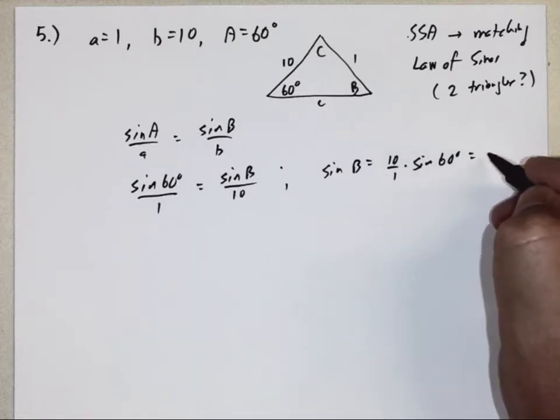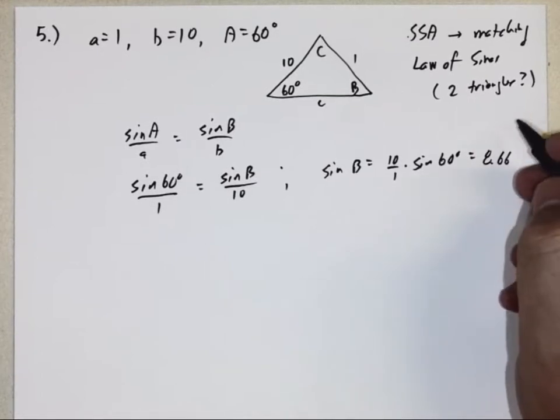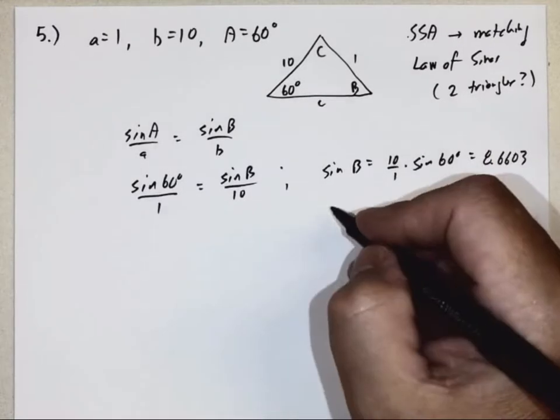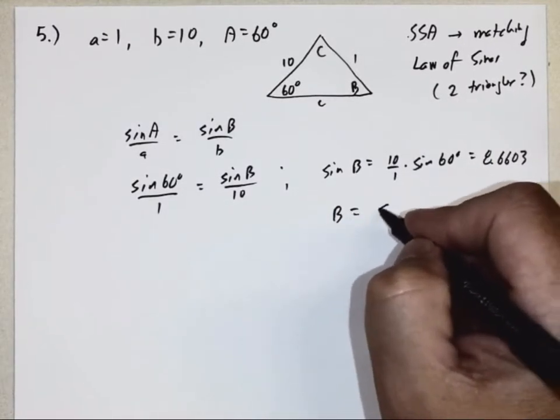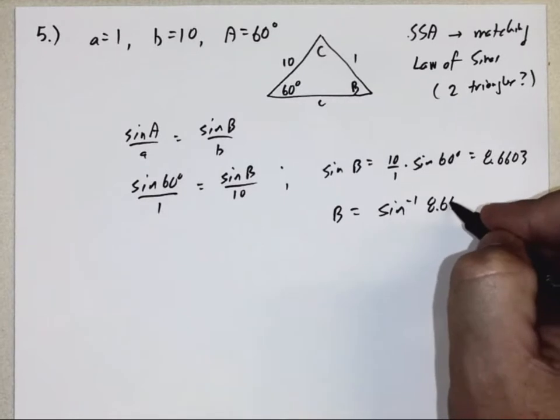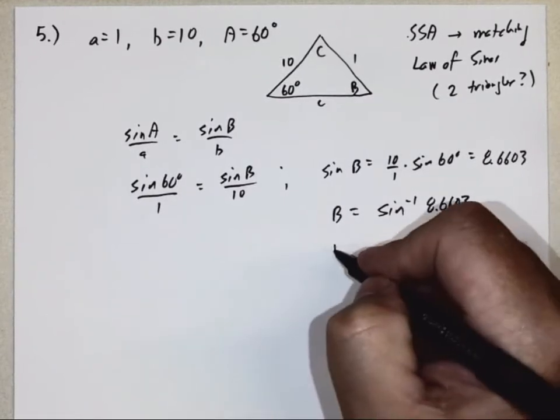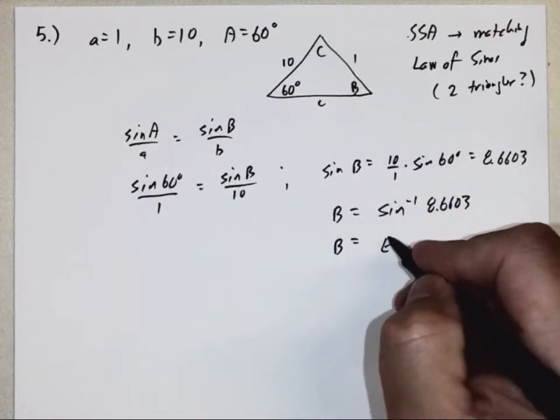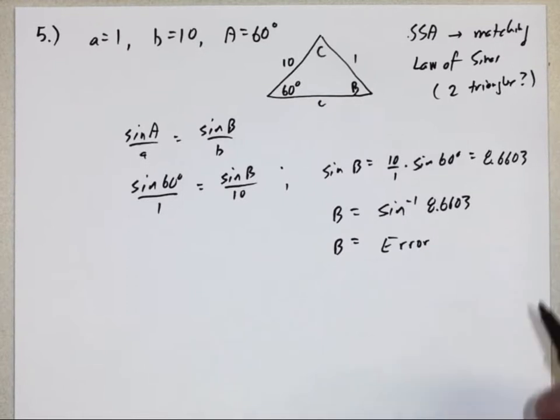Sine of 60 times 10, basically. Once again, I'm not going to round too much. 8.6603. Now you get angle B. Of course, you take the inverse sine. Let's grab a calculator, inverse sine. You know what my calculator says? Error.